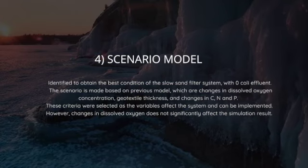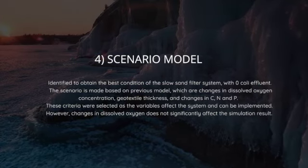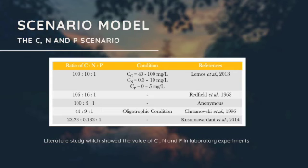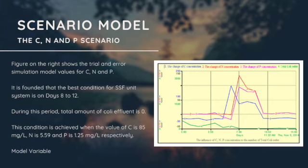Changes in dissolved oxygen does not significantly affect the simulation result. The table shows the previous record of ratio of CN and P. The scenario model of the CN and P is like the figure on the right, which shows the trial and error simulation models values for CN and P.